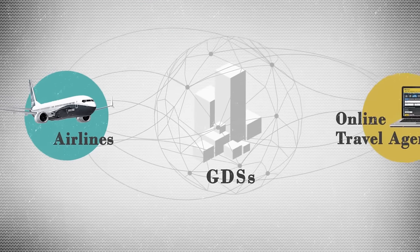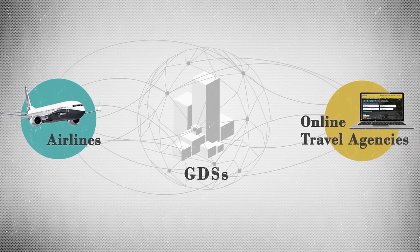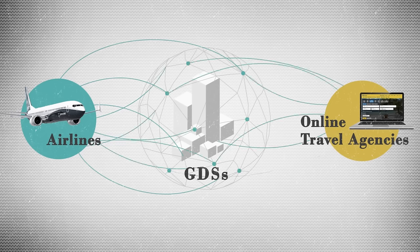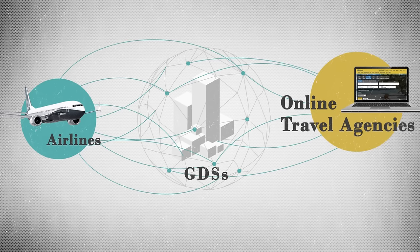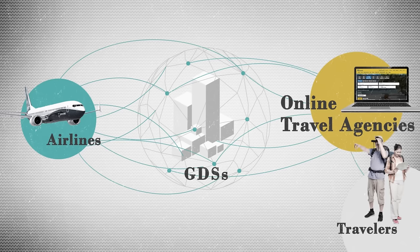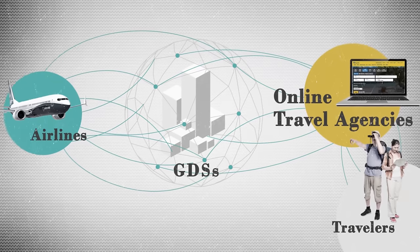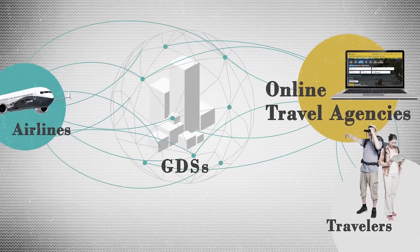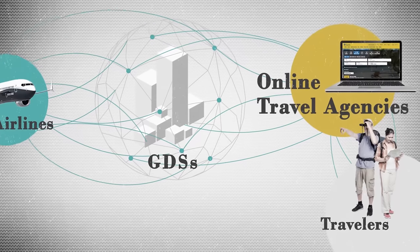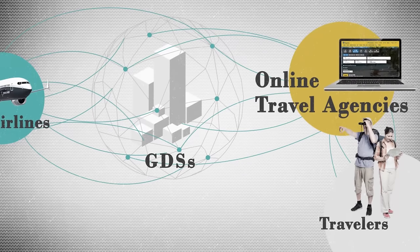Powerful middlemen, GDSs have become close to a monopoly on the air travel distribution market. For many years, they've been the main point of contact for both airlines and agents, including online travel agencies. Most travelers today research prices at OTAs, and about a third of travelers worldwide purchase tickets there.